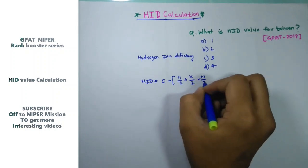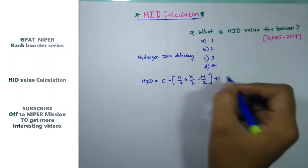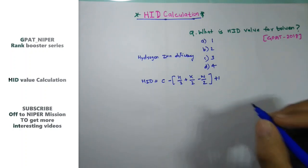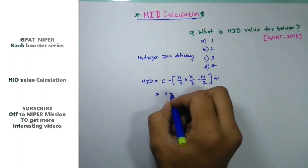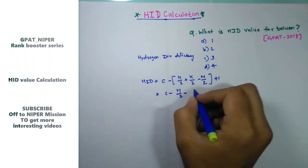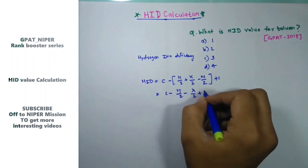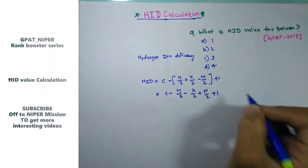Or you can write like this: C - H/2 - X/2 + N/2 + 1. The question is: what is the HID value for toluene?